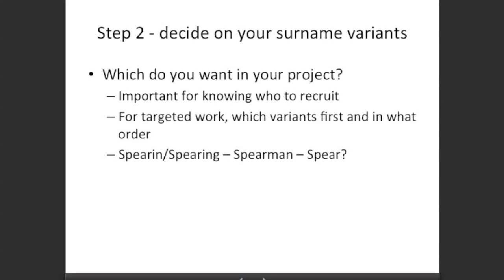The second step is to decide on your surname variants — who do you want in your project, which variants? This is important for knowing who to recruit and for any targeted work. For example, you might target Spearings first, then Speerings, then at a later stage include Spears as well, since some Spears may have originally been Spearings. The project can get wider and wider, so it's important to decide which variants you want and which ones you're going to start with.